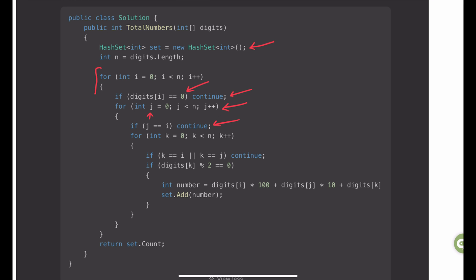The first check is to make sure j is not equal to i. And then I have the third iteration for k that is the units place. Just like we discussed, I have the first check to make sure k is not equal to i or j.